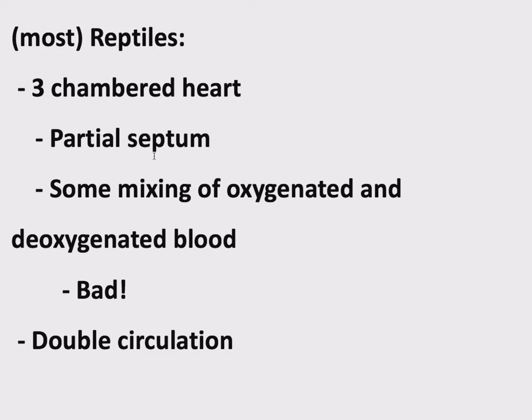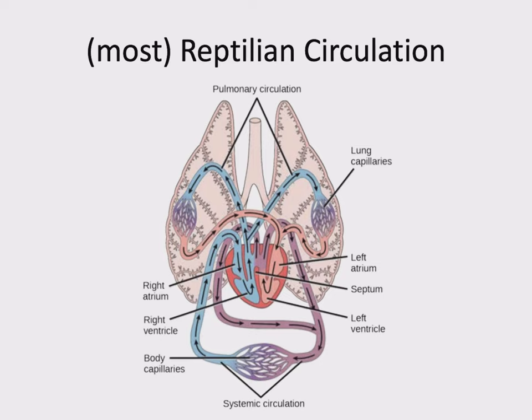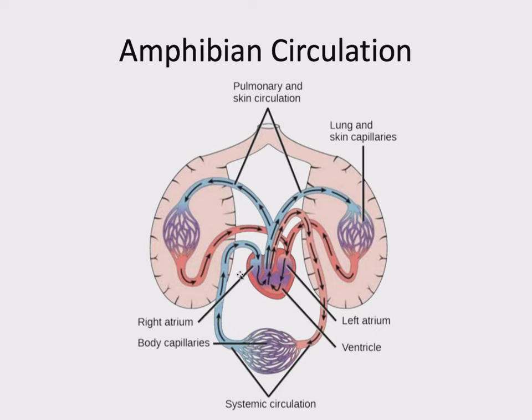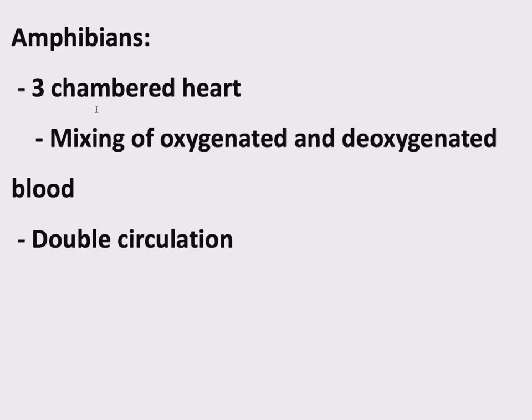Let's move from reptile to amphibian — we're going backwards evolutionarily, so things are getting more primitive and more simple. Spot the difference? This mixing is even worse. Without even a partial septum to divide this chamber, this is a fully three-chambered heart where there's a lot of mixing of oxygenated and deoxygenated blood. Amphibians have a three-chambered heart, no septum at all, mixing of oxygenated and deoxygenated blood — that's bad. And this is still double circulation.